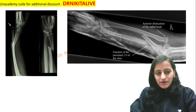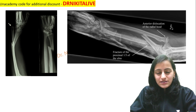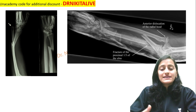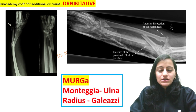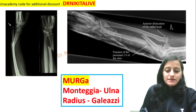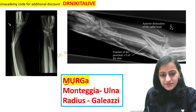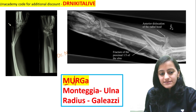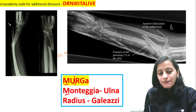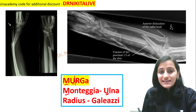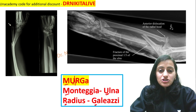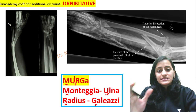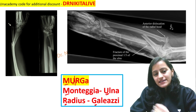The easy trick to remember whether Monteggia is a radius or ulna fracture, and Galeazzi is a radius or ulna fracture, is to remember the mnemonic 'Murgh' or 'Murga'. Murga helps us remember: M is U and R is G — that is, Monteggia is ulna fracture and Galeazzi is radius fracture. So remember Murga: Monteggia is ulna, radius is Galeazzi.